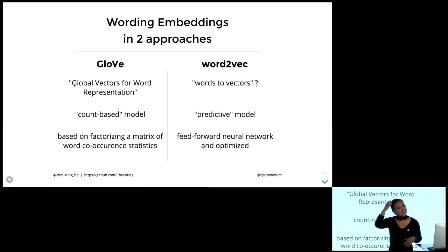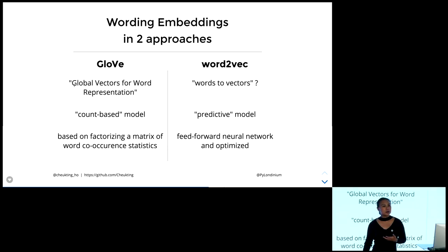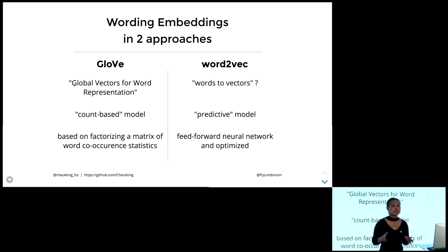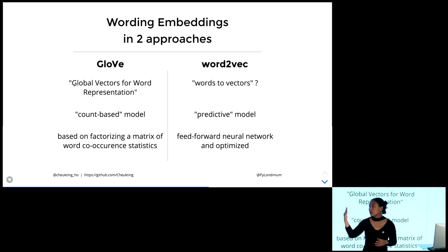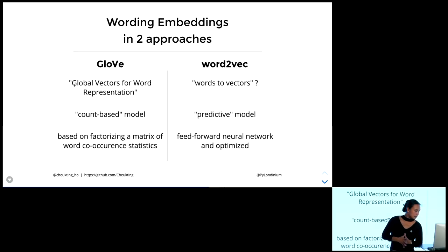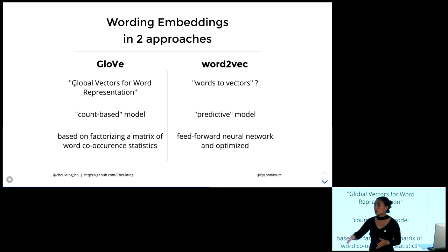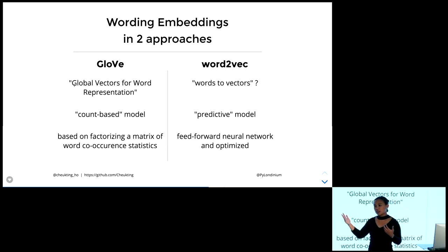For Word2Vec — word to vector — it's a predictive model. Rather than just counting co-occurrence, it trains the weights using a neural network. That's why it's called predictive. It's a contrast with GloVe. In the first example I'll show, we use a Word2Vec approach trained together with our model. In the second, I'll show what happens when we fit pre-trained GloVe word embeddings, and how that compares.